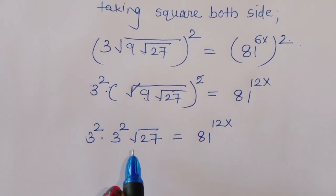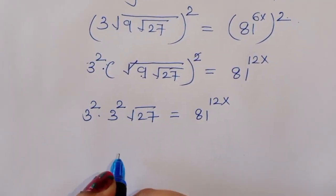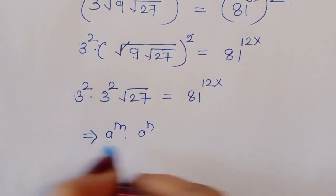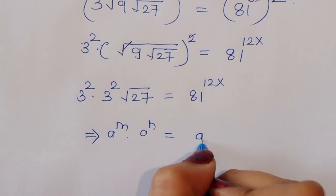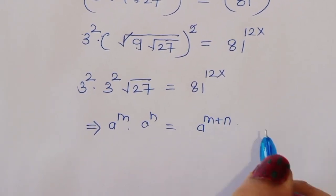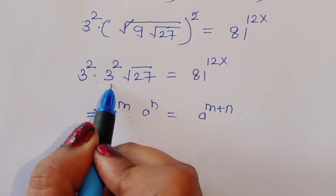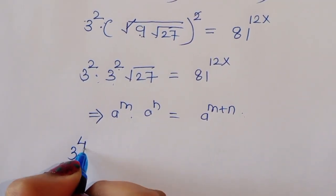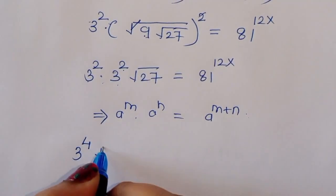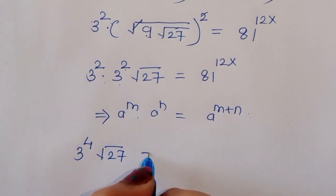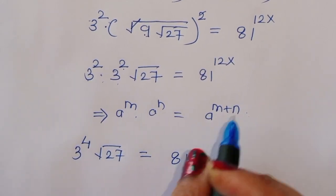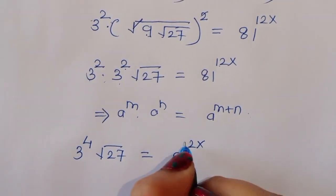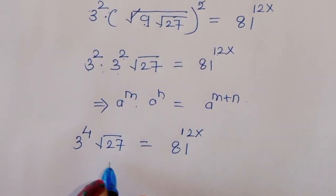We know the formula: a power m times a power n is equal to a power m plus n. Here 3 power 2 times 3 power 2 gives us 3 power 4. So we can write 3 power 4 times square root of 27 is equal to 81 raised to 12x.